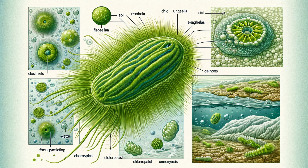Chlamydomonas. Characteristics: Chlamydomonas is a genus of unicellular green algae. They have a pair of flagella and a single large chloroplast. Habitat: Found in diverse freshwater environments, including soil, water, and snow. Significance: Chlamydomonas is a model organism in biological research, especially in studies of photosynthesis, cell motility, and flagellar function.